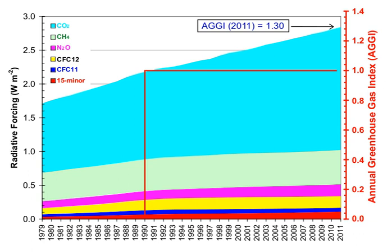Indirectly, human activity that increases global temperatures will increase water vapor concentrations, a process known as water vapor feedback. The atmospheric concentration of vapor is highly variable and depends largely on temperature, from less than 0.01% in extremely cold regions up to 3% by mass in saturated air at about 32 degrees Celsius.